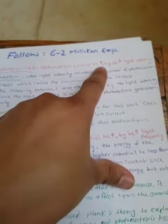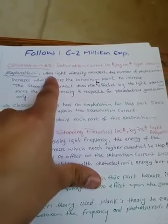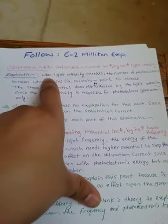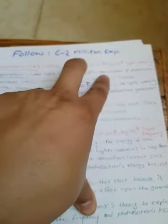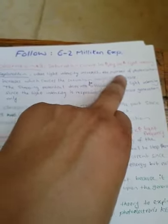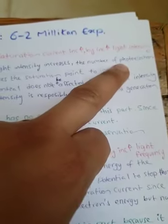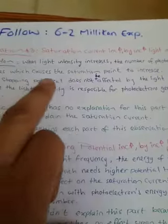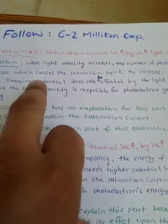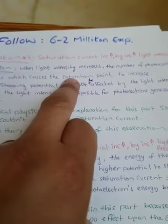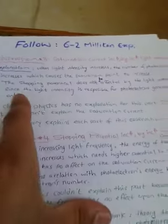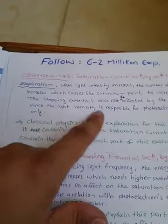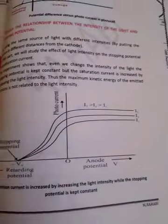The third observation: saturation current increases when light intensity increases. The explanation is that increasing light intensity increases the number of photoelectrons, and since current is related to the number of photoelectrons, more electrons means higher current, and thus a higher saturation current. Importantly, the stopping potential is not affected by light intensity.